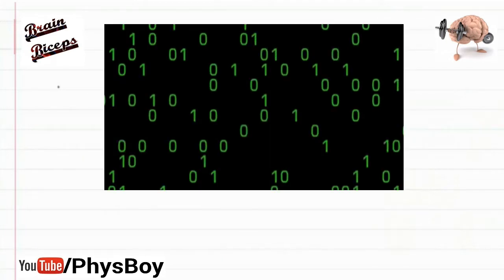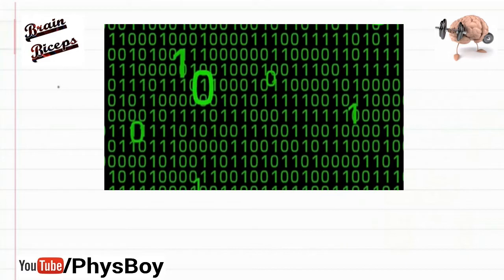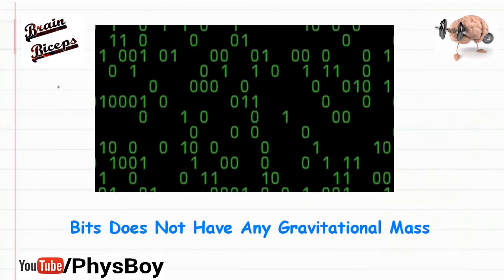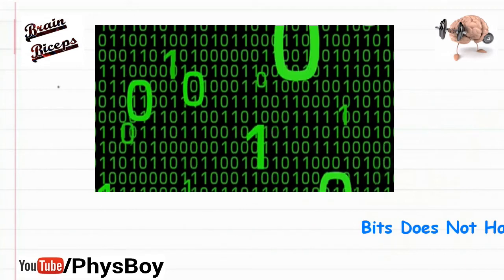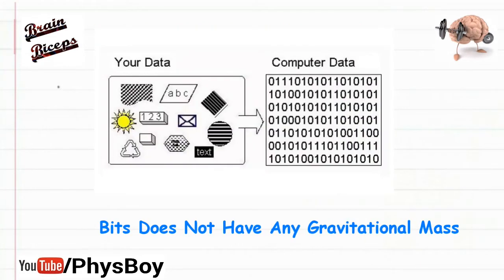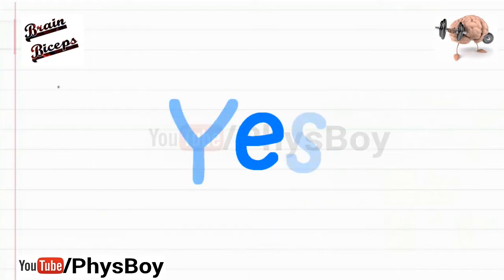The standard answer in science is that the binary information does not have any mass. The bits do not have any gravitational mass, so technically the weight of the hard disk will not change when you store data or information. But this is not the case. The actual answer is yes.